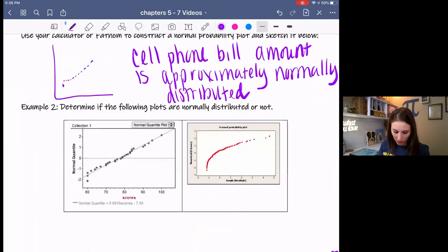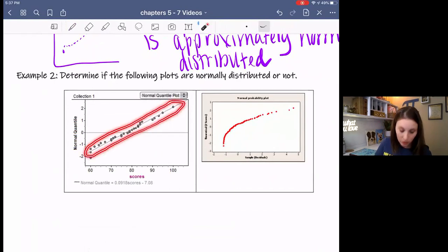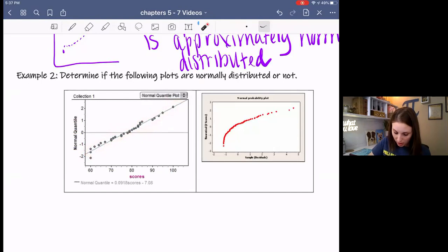So down here, I have two examples of variables that were plotted or graphed on a normal probability plot. So I want you to take a look at those and decide which one or if they both are normally distributed or not. You should find that this one follows a linear pattern. This one has some definite curvature about it. So this one is a yes. This one is a no. Not too bad.